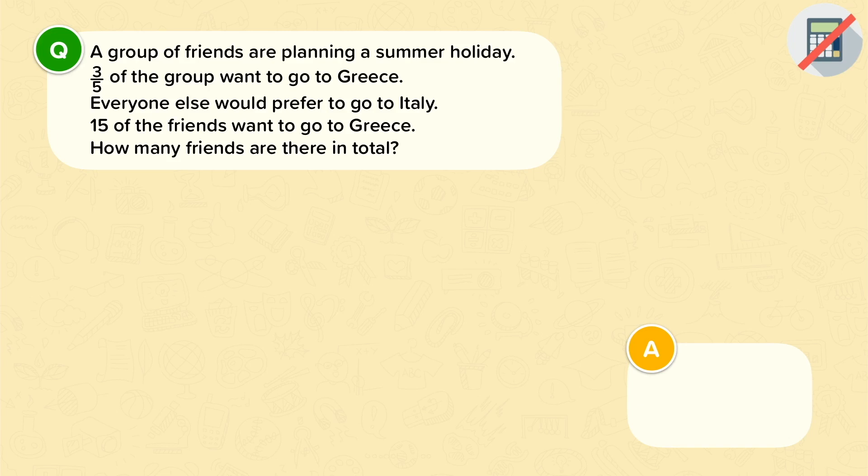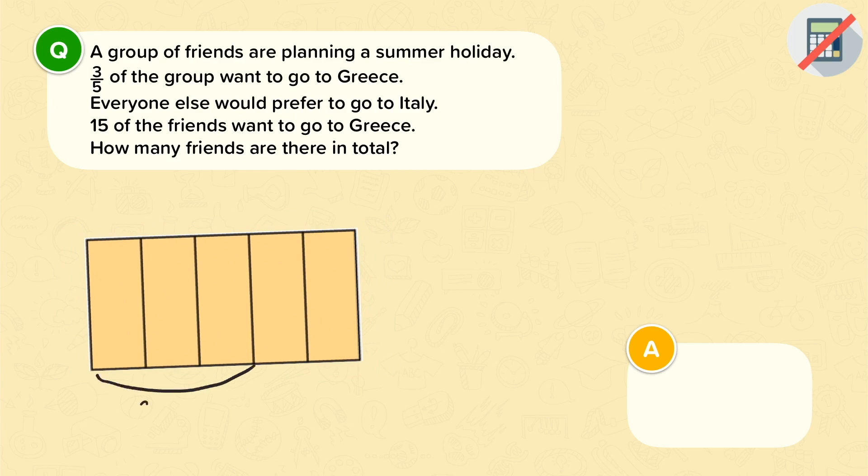So again, this is a question where it helps to have a diagram to illustrate. Okay, so we've got our group of friends. 3 fifths of the group want to go to Greece. Okay, and everyone else wants to go to Italy. 15 of the friends want to go to Greece. So that 15 is over here with the 3 fifths. And we want to know how many friends there are in total.